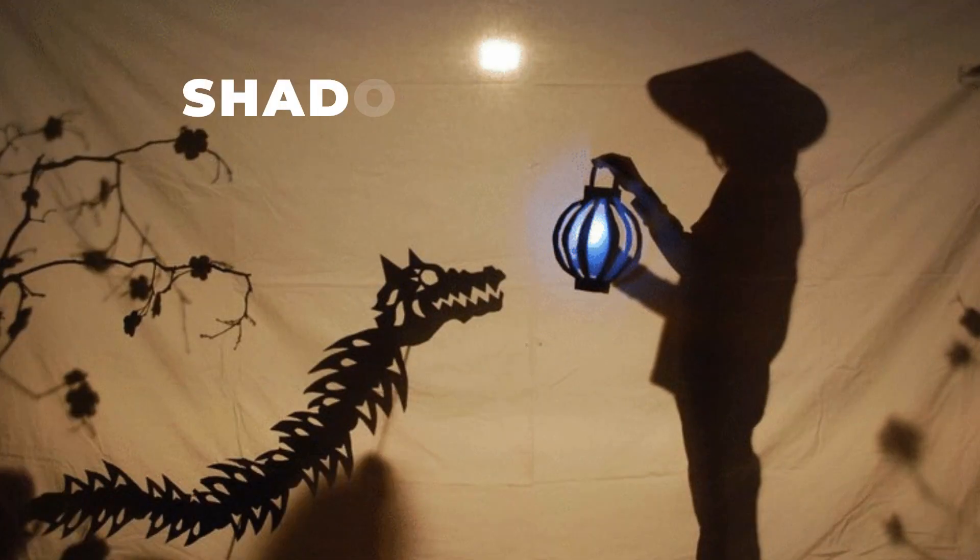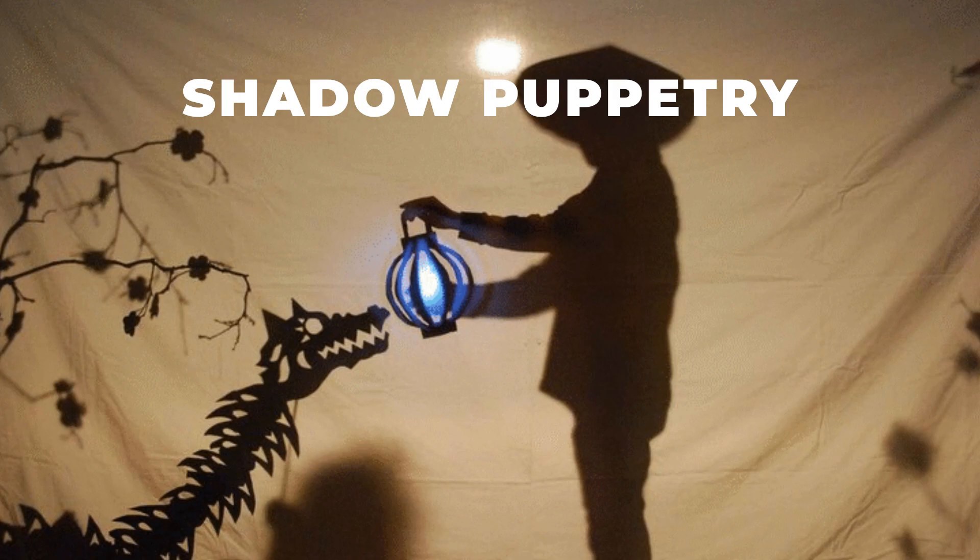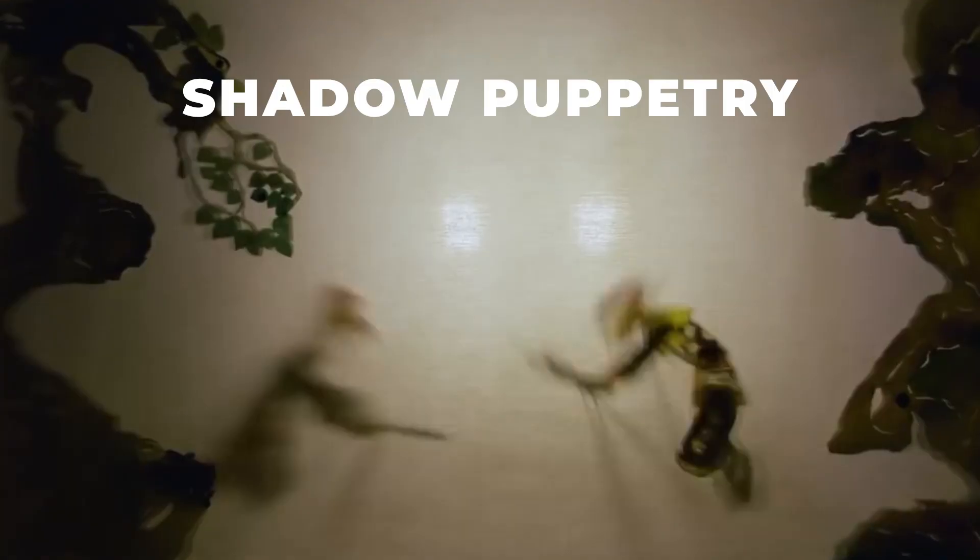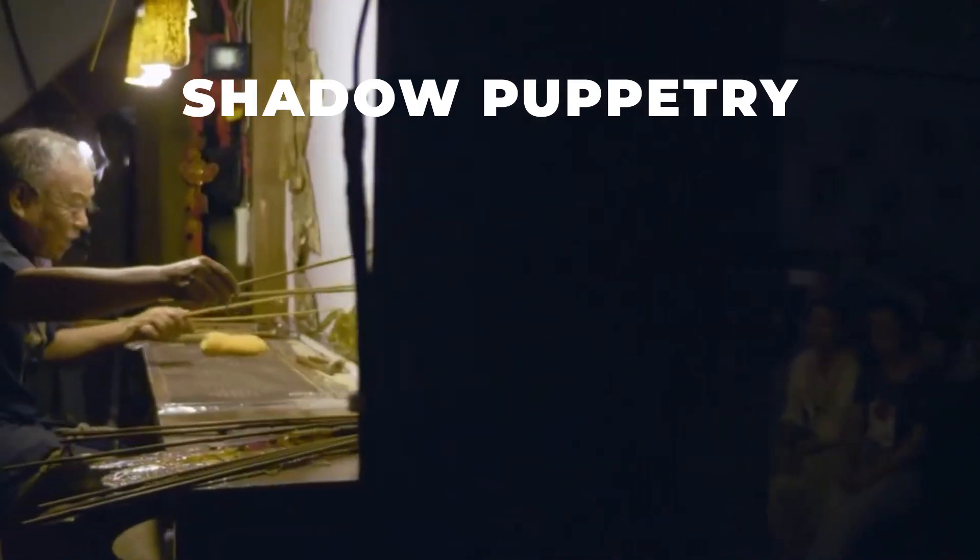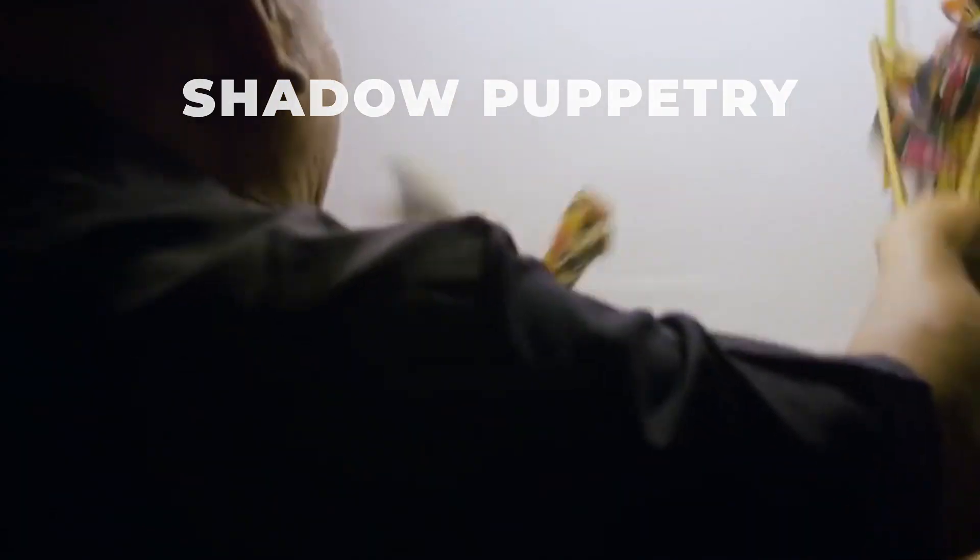One form of shadow art is shadow puppetry. It's an ancient art form where cut-out figures are manipulated behind a screen to create silhouettes and tell stories. Artists use light to cast shadows of the puppets, bringing them to life in front of an audience.